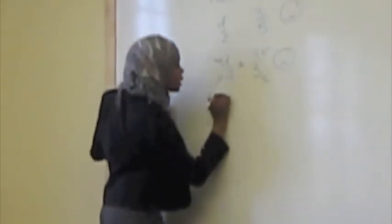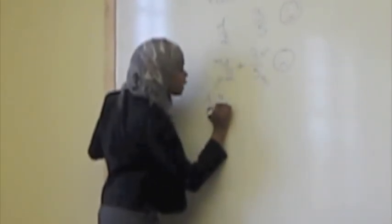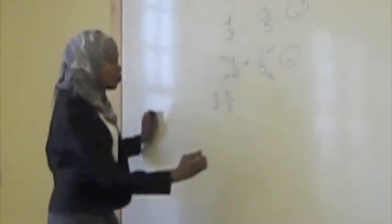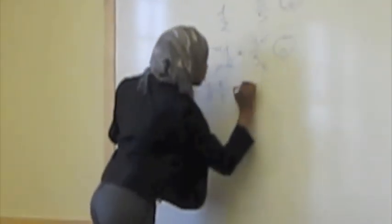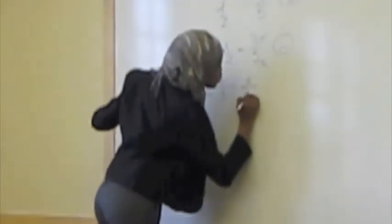So, one half, we multiply one half by five fifths. We end up with five times one, that's five. Five times two, ten. Great.